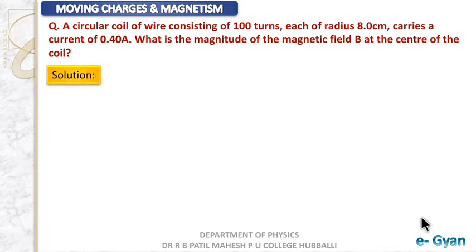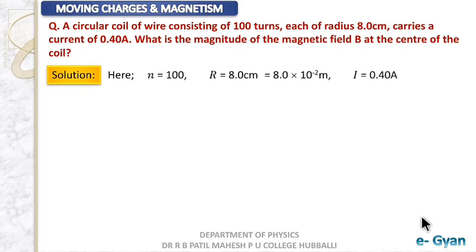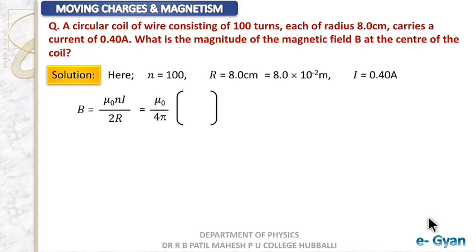Let us first write down the given quantities. N equals 100 (number of turns), R equals 8 centimeter (radius of each coil), and current I equals 0.4 ampere. The formula for finding magnetic field at the center of the coil is B equals μ₀NI divided by 2R. We will rearrange this by writing μ₀ divided by 4π first, then the remaining quantities in a bracket.